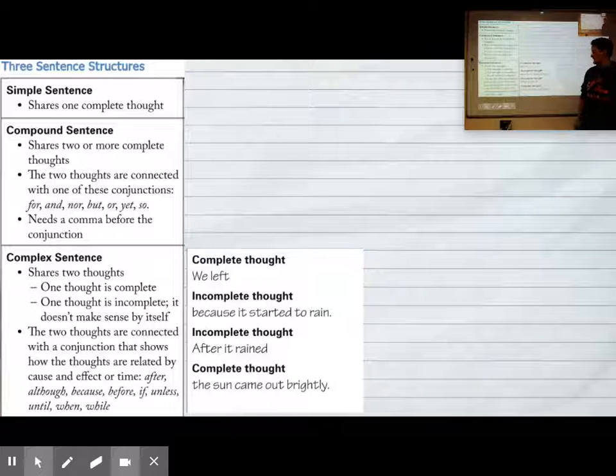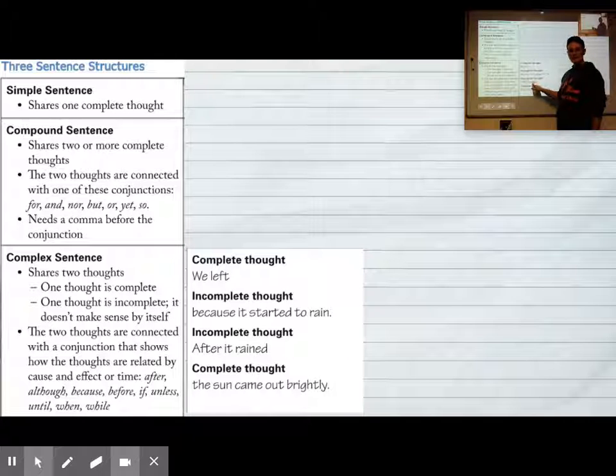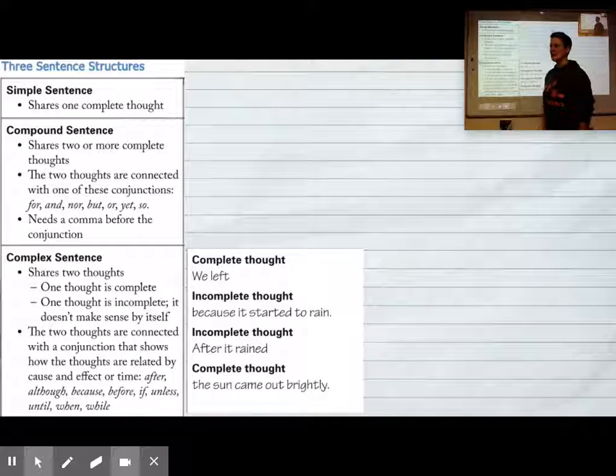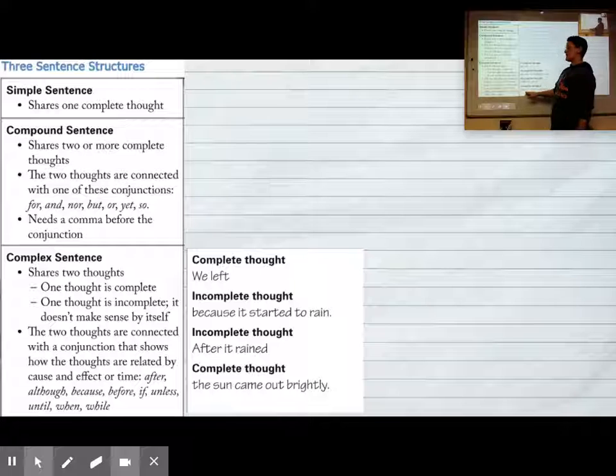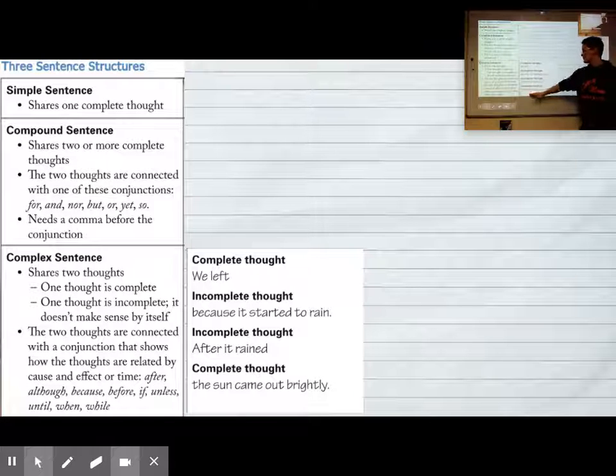There's another example that says after it rained, the sun came out brightly. So after it rained is an incomplete thought. If I were just to say after it rained, everybody would just be like, and what? Tell me more. The sun came out brightly. Those are an incomplete thought and a complete thought.